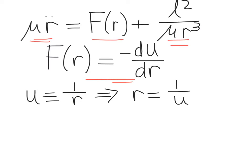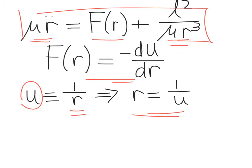We can define a new variable, little u, as being 1 over r, so that r is just 1 over u. This definition actually turns out to be key to solving this dynamical equation.